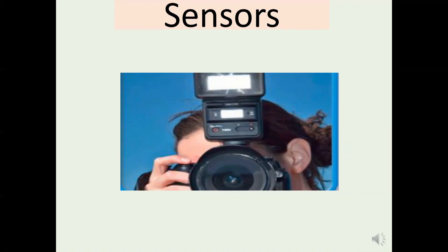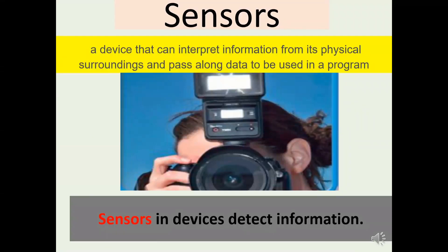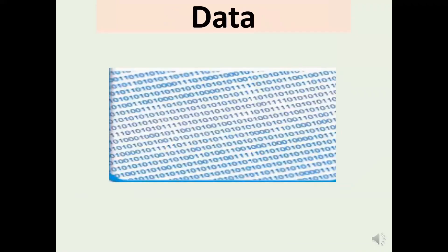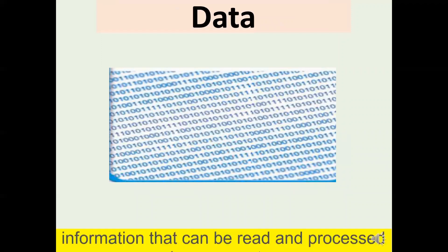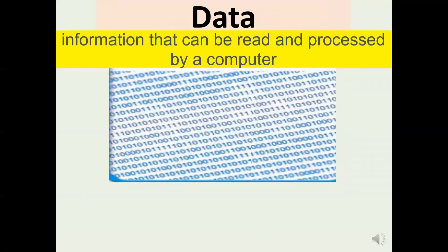3. Sensors. Sensors are devices that detect information. If a camera's sensor doesn't detect enough light, it activates a flash. 4. Data. A computer can sort through long lists of data or information, often by converting it into ones and zeros.